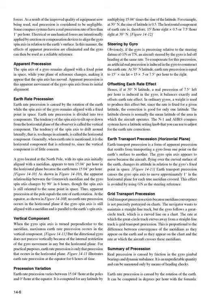Precession variation. Earth rate precession varies between 15.04 degrees per hour at the poles and 0 degrees per hour at the equator. It is computed for any latitude by multiplying 15.04 degrees times the sine of the latitude. For example, at 30 degrees north, the sine of latitude is 0.5. The horizontal component of earth rate is therefore 15 degrees per hour right times 0.5, or 7.5 degrees per hour right at 30 degrees north.